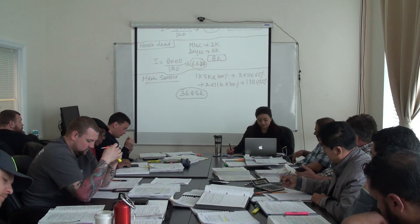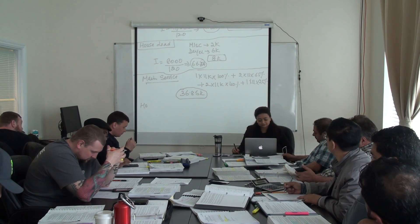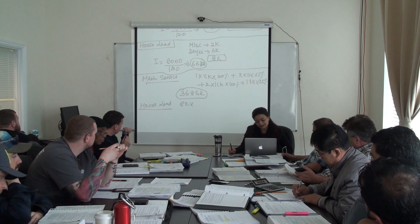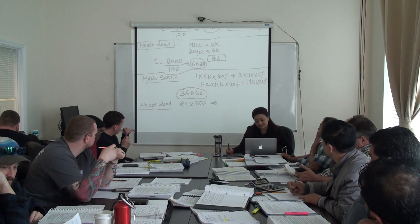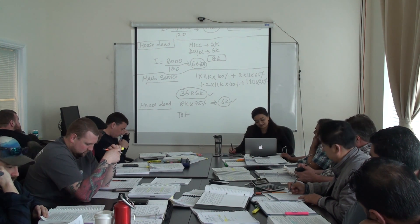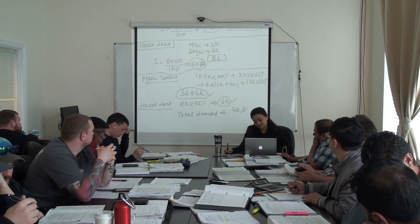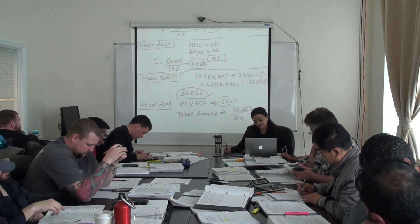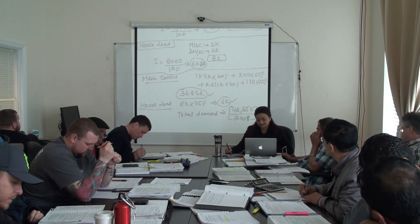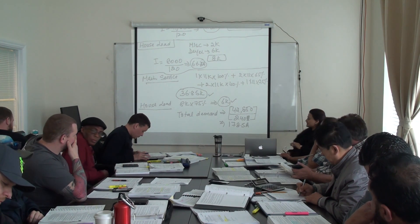So this is the whole thing about suites. Now house load — because there was no heat there either, life was easy. We take 8K and multiply by 75%, which is 6K. Add item 1 and item 2 and your job is done. Total demand? 42,850. Voltage is 240, single phase — so no square root of 3. When you do the math: 178.5 amps. I should get off the screen so you guys can see exactly what I just did.